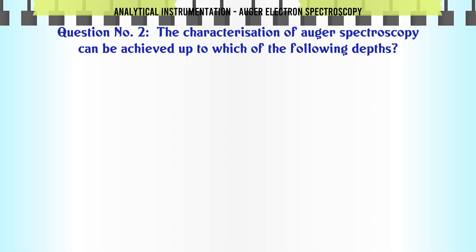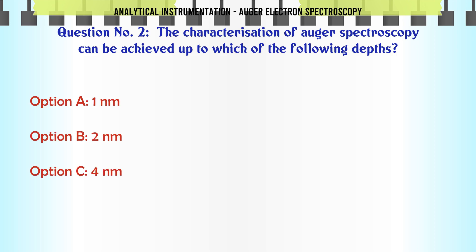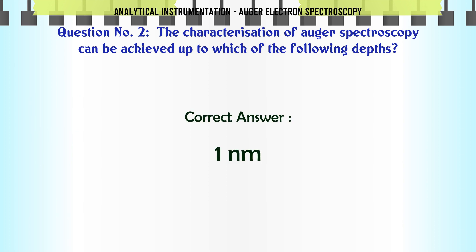The characterization of Auger spectroscopy can be achieved up to which of the following depths? A. 1 nm. B. 2 nm. C. 4 nm. D. 8 nm. The correct answer is 1 nm.